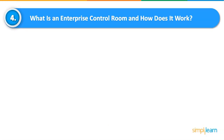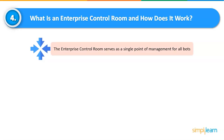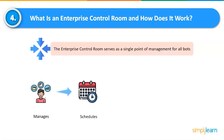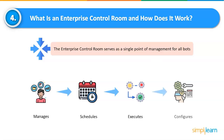What is an Enterprise Control Room and how does it work? The Enterprise Control Room serves as a single point of management for all bots. It manages, schedules, executes, and configures various bots and Bot Runner capabilities using a collection of specialized web services. The Enterprise Control Room is placed on a server in the data center and configured to work with other data center components.